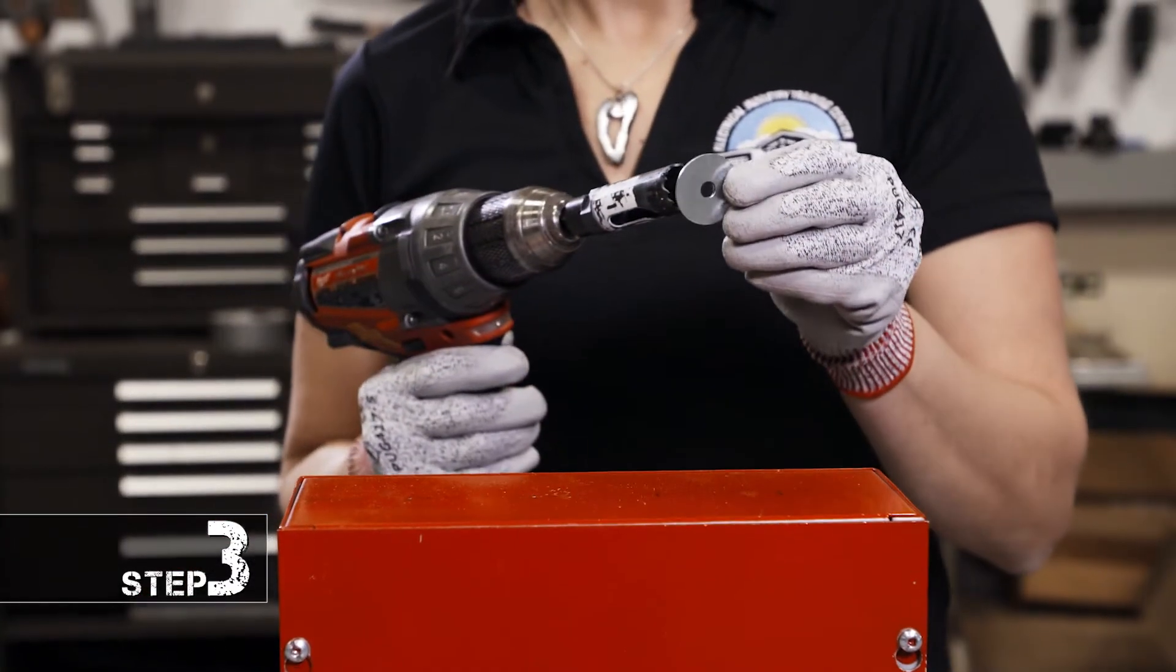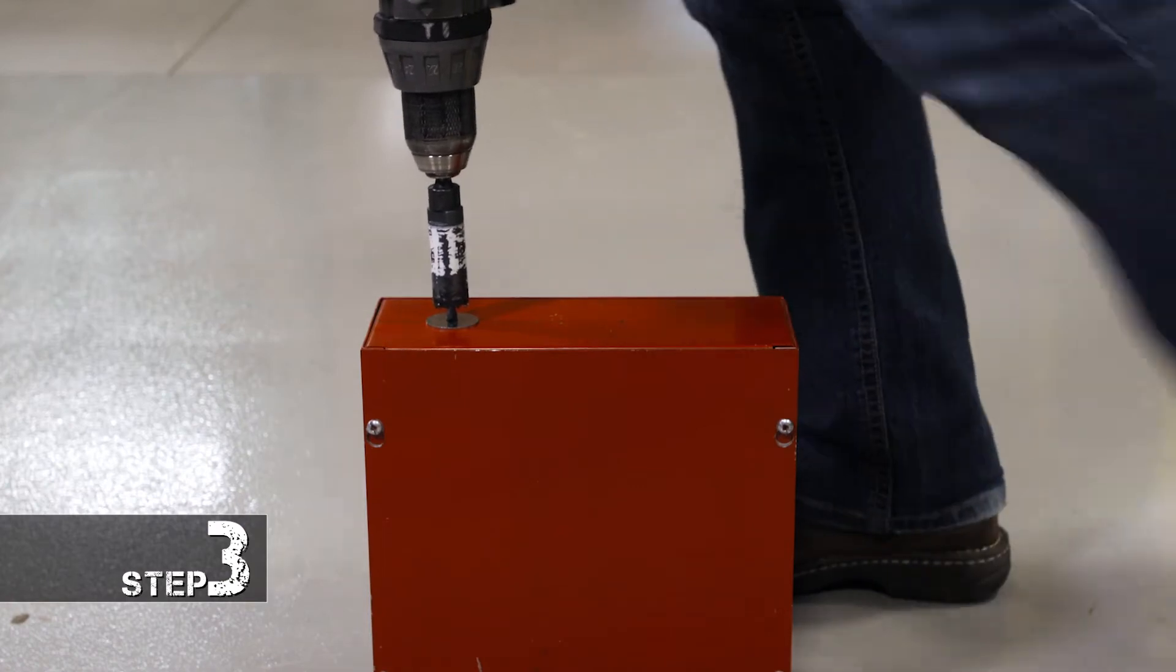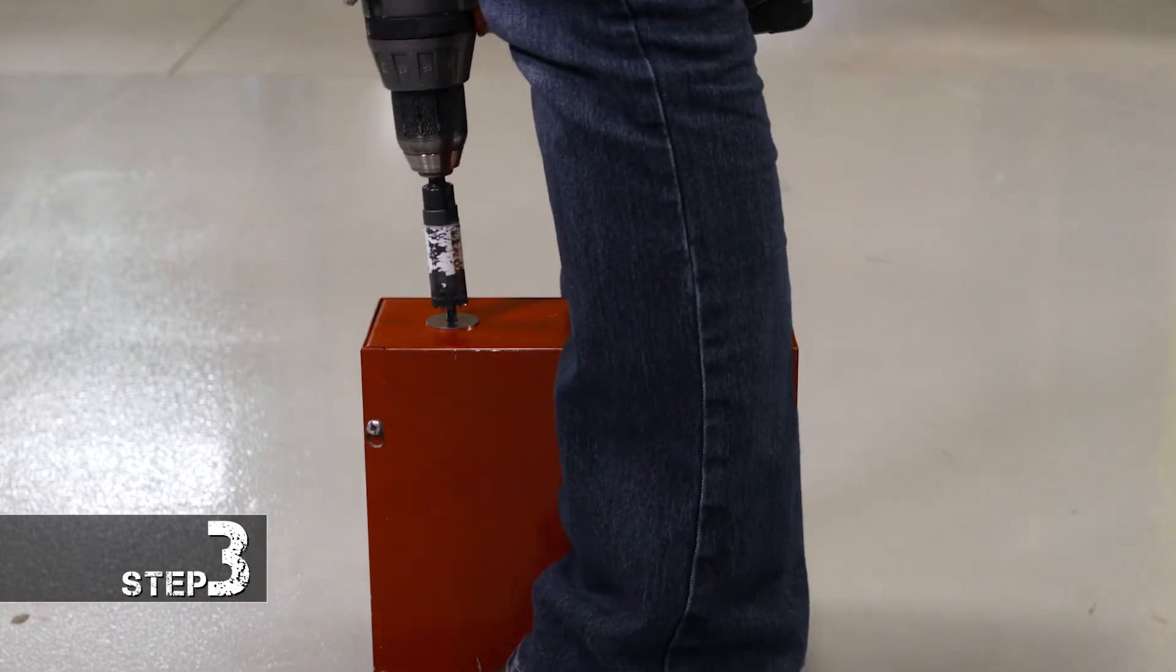And step three, we're going to go ahead and drill the hole. We're going to take the quarter-inch washer and we're going to put it around the drill bit, line it up with the mark that we made, and drill the hole.